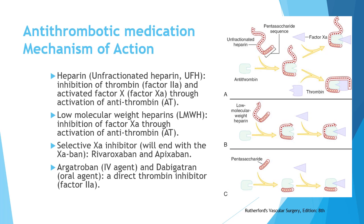There is a newer group of chemoprophylaxis agents that work directly on factor 10 without going through antithrombin. These are called the 'xabans' — because 'Xa' refers to active factor 10 and 'ban' means prevent. Any medication ending in '-xaban' (e.g., rivaroxaban, apixaban) directly inhibits active factor 10 without working through antithrombin.